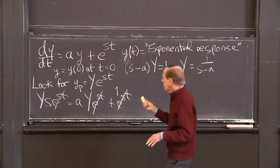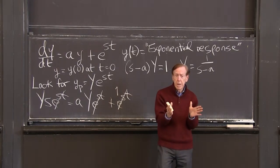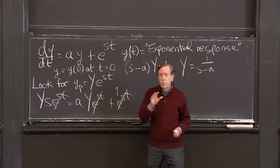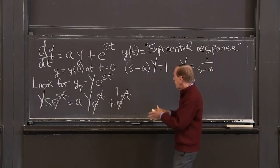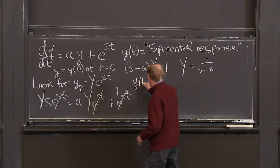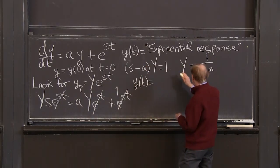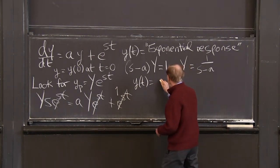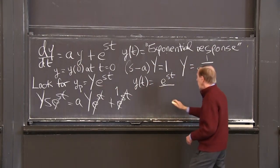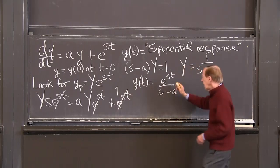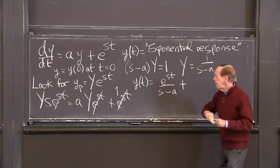That's not the end, because that solution won't match the initial condition. So how do I match an initial condition? What I have found is a particular solution, and I need also the null solution, the homogeneous solution. So the full solution y(t) is this Y particular. So capital Y, I now know is that. So I have e^(st) over... I'm putting in Y, the right value of Y. So that's the particular solution that I found, plus any null solution.